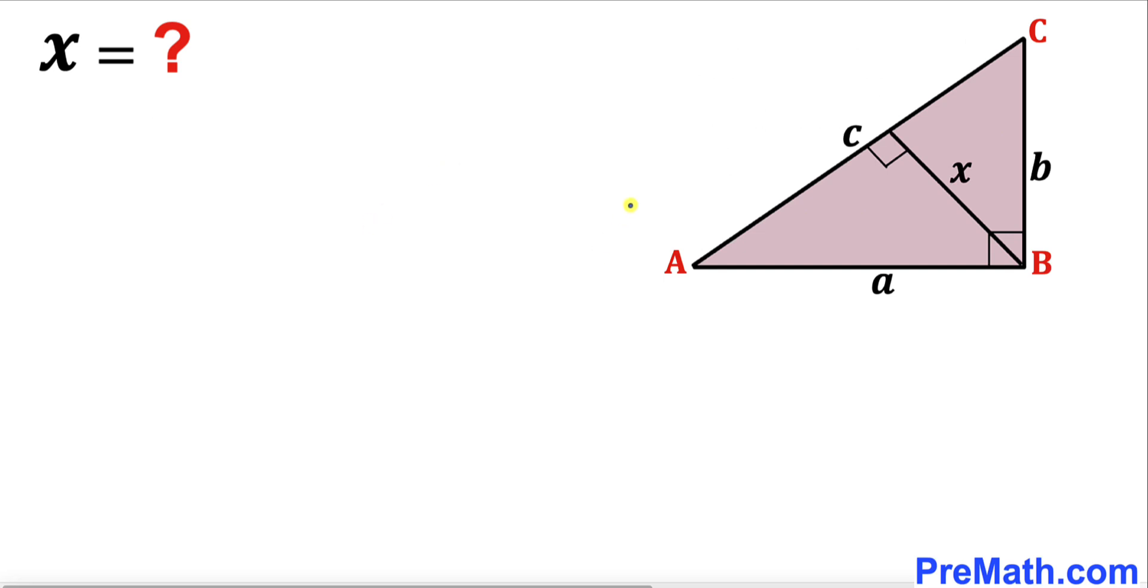Let's get started with the solution. Let's recall the area of a triangle formula: Area equals one-half times base times height. Now let's focus on this triangle ABC.